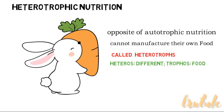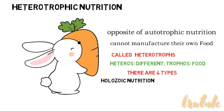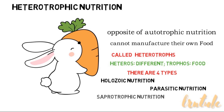The word heterotroph is formed by combining two Greek words: heteros, which means different, and trophos, which means food. Most animals, fungi, protozoa, and some bacteria belong to this group. There are four types of heterotrophic nutrition: holozoic nutrition, parasitic nutrition, sapotrophic nutrition, and symbiotic nutrition.